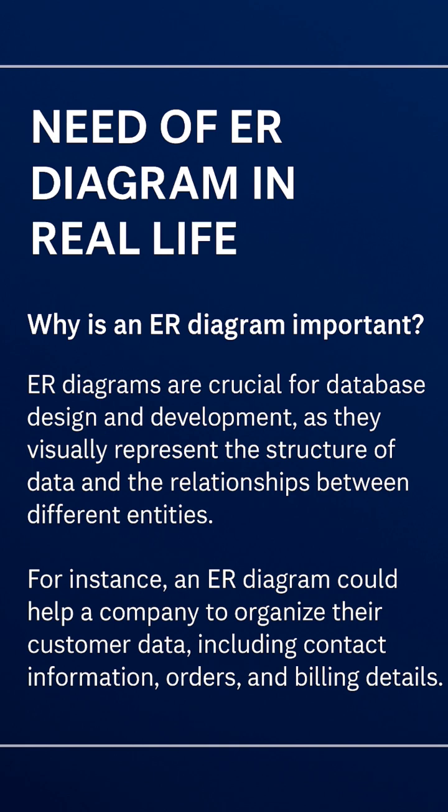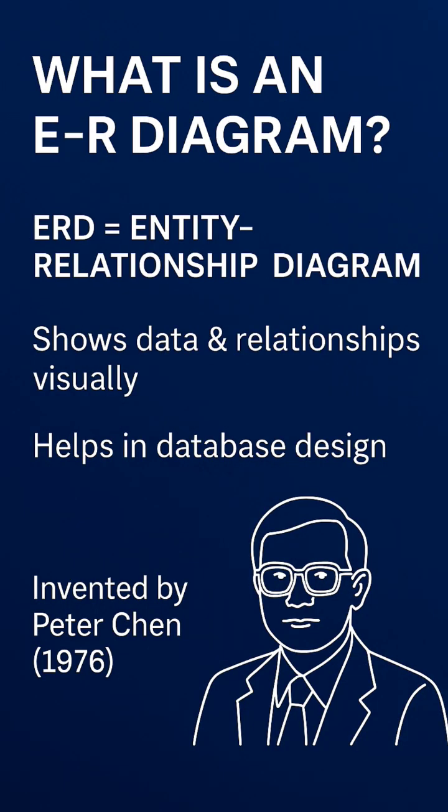A diagram is a blueprint of any design — it provides a conceptual idea on paper before physical design, because making changes on paper is very easy compared to changes in physical design if the customer is not satisfied. An ER Diagram, or Entity Relationship Diagram, is a blueprint that visually represents data and the relationships between entities.